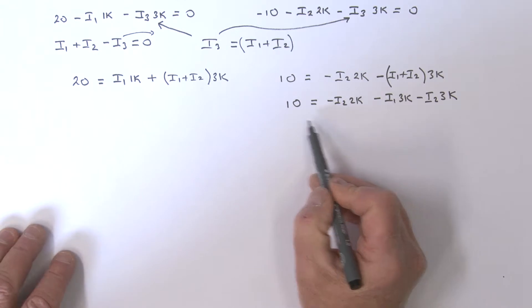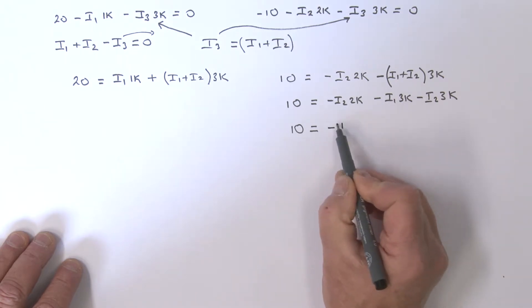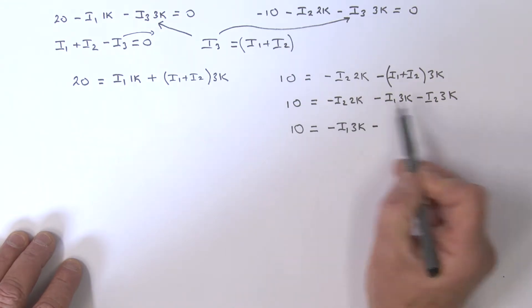Let's collect all our terms together. So I've got 10 equals - put i1 first - minus i1 times 3k. And then how many i2s do I have? I've got 2 and 3, so I've got minus i2 times 5k.